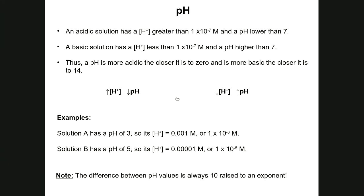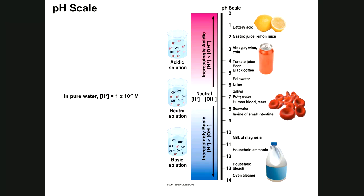The difference between adjacent pH values — pH 0 to 1, 1 to 2, 2 to 3 — represents a tenfold difference in proton concentration. There are 10 times as many protons in a solution with pH 7 than one with pH 8. Likewise, a solution with pH 6 has 10 times more protons than a solution with pH 7.